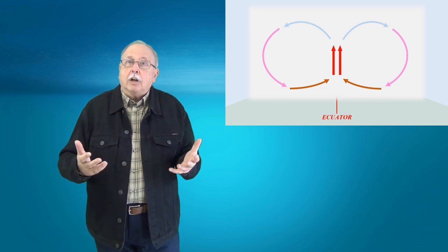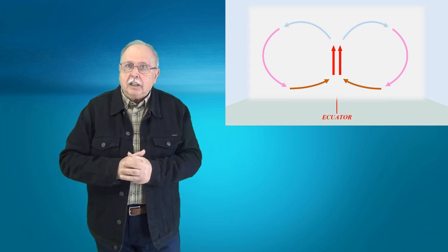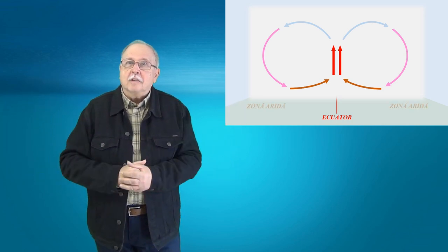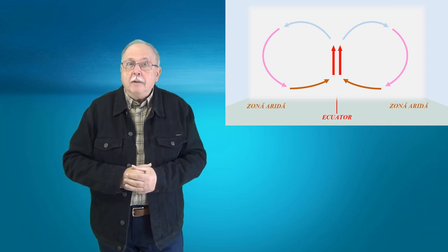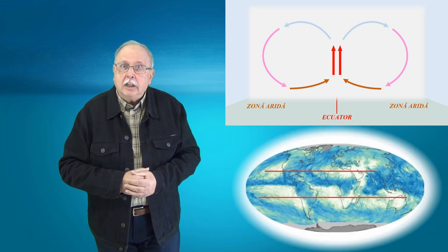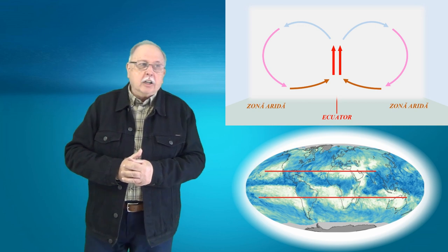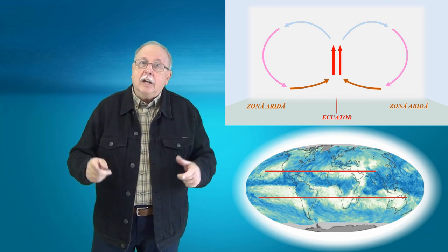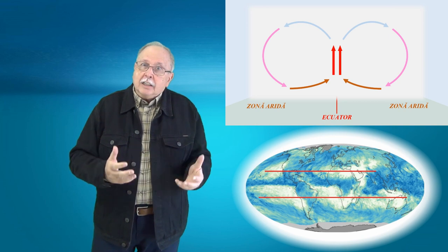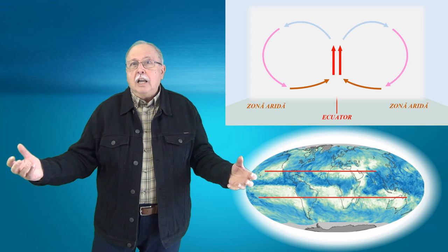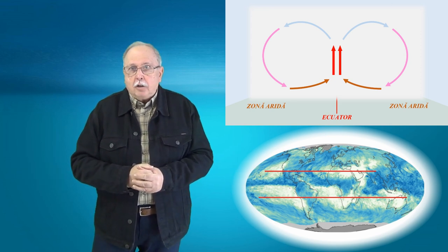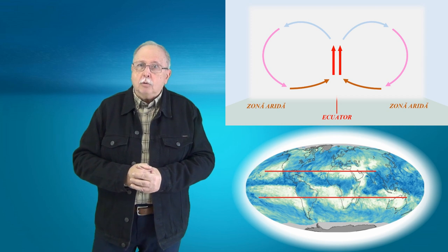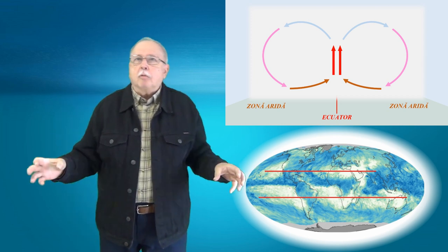și în al doilea rând pentru că acest aer nu se mai răcește, din potrivă se încălzește pe măsură ce se apropie de sol. Din această cauză, zonele deasupra cărora aerul coboară, situate simetric, deoparte și de alta ecuatorului, adică zonele curenților descendenți sunt zone uscate. Ce credeți? Unde sunt aceste zone? Ați ghicit cam la 30 de grade latitudine nordică și sudică. Acolo avem marile deșerturi și zone aride ale planetei.